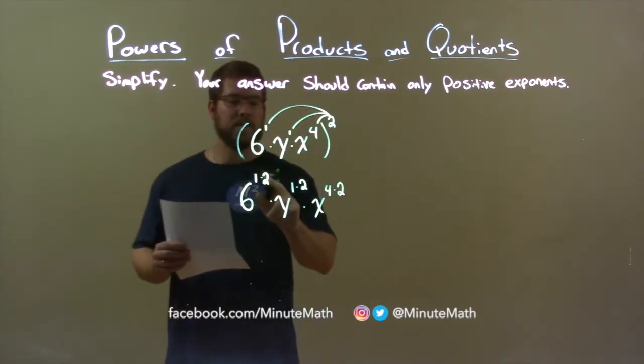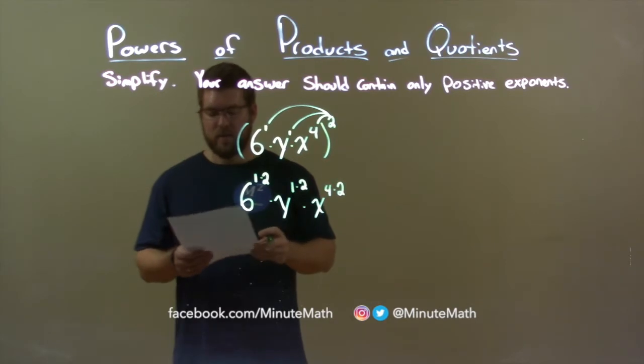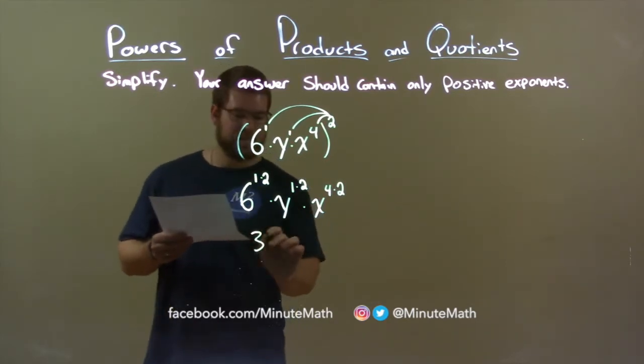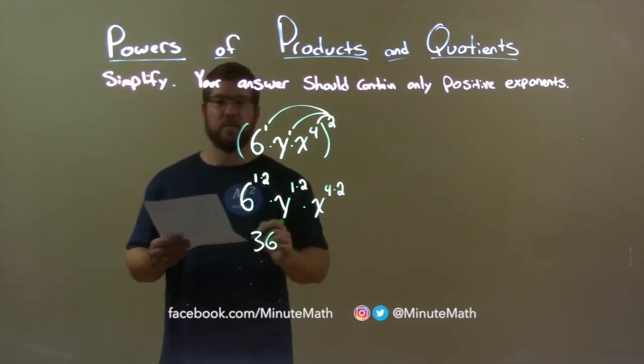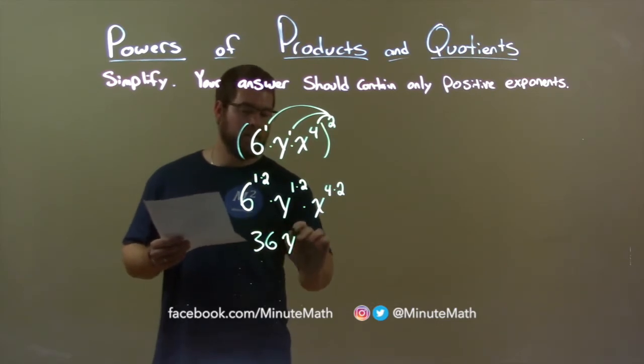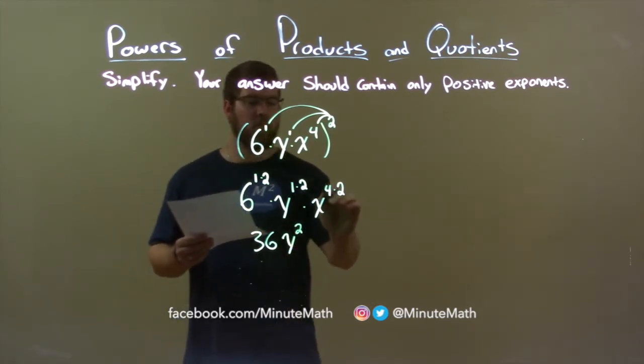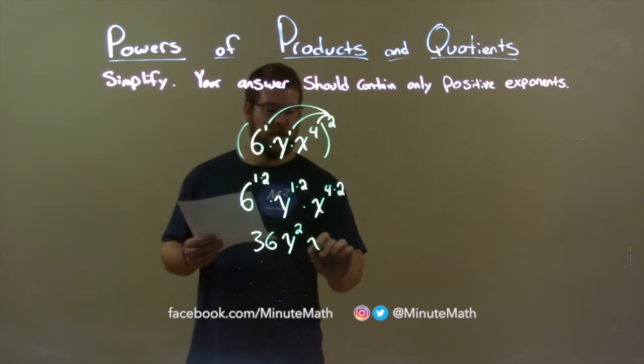Now we simplify. 1 times 2 is 2, and 6 squared is 36. Again, 1 times 2 is 2, and we now have y squared. 4 times 2 is 8, so we have x to the 8th power.